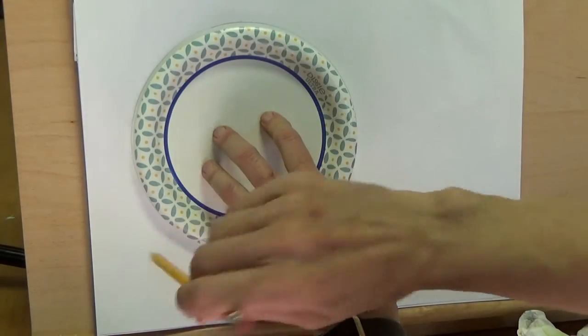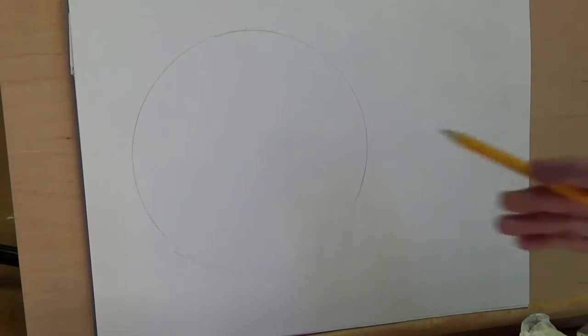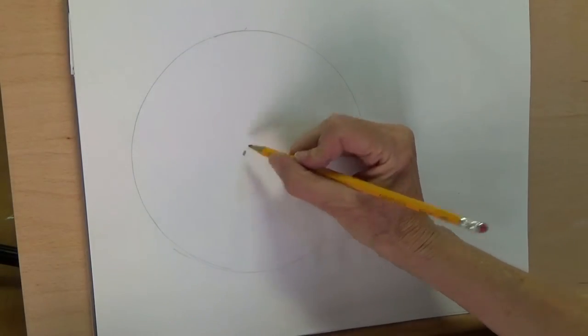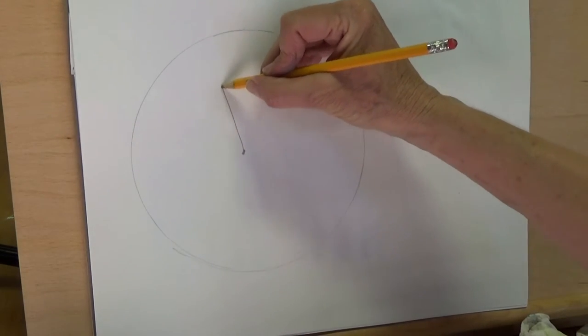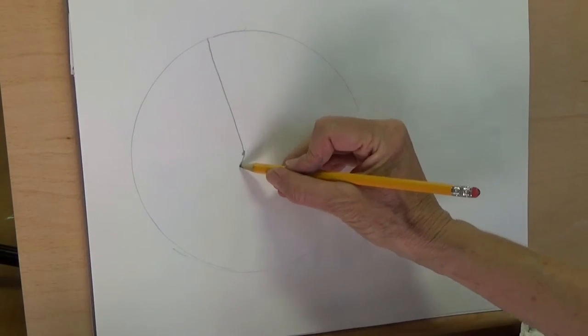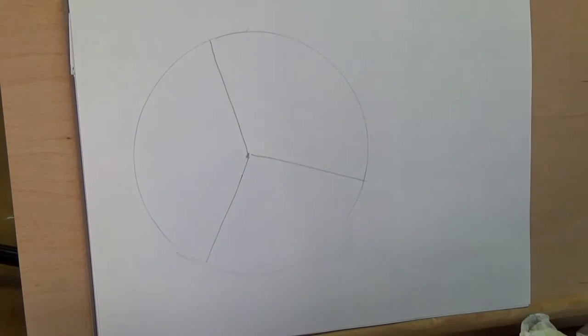You're going to start by tracing that circle. Then find the middle of the circle. You're going to divide that circle into three equal sections. If you need to stop the video to keep up, do so. Now each one of those sections you're going to divide into two.